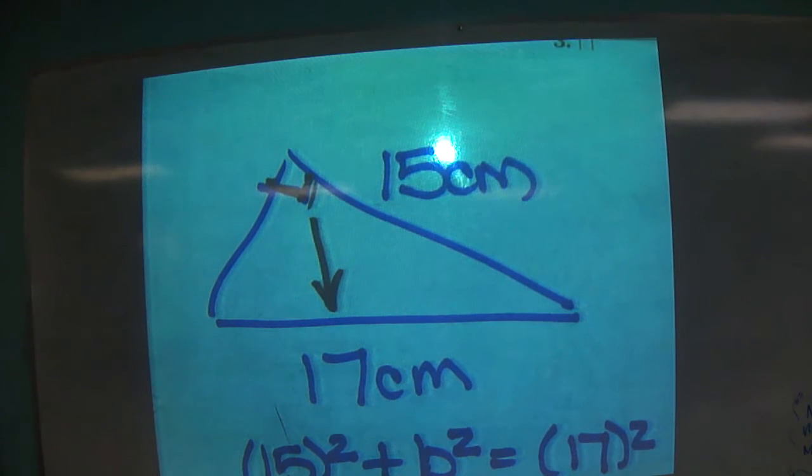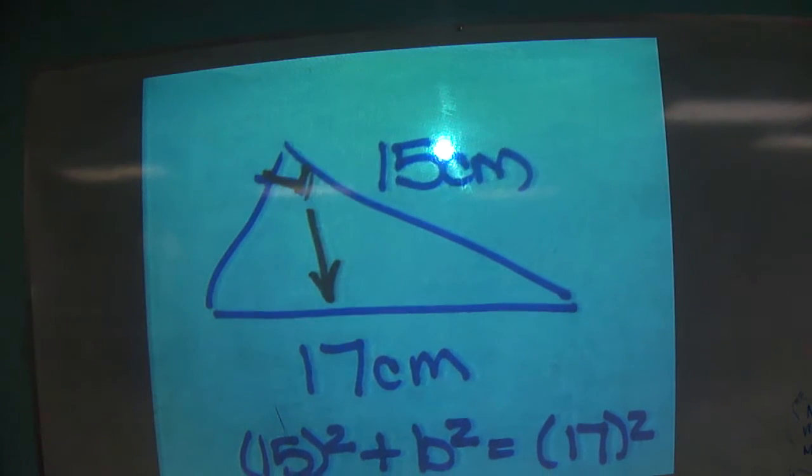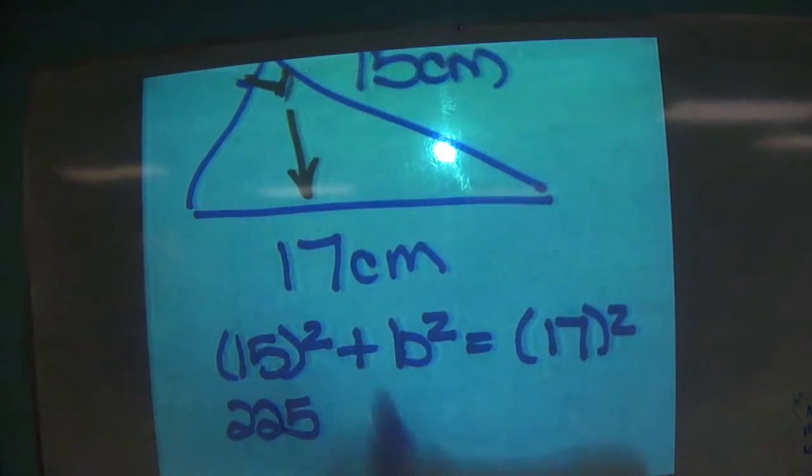So 15 squared. 15 is one of those that you've got to kind of keep in your chops. 15 squared is 225. You're going to come up on that one all the time. Plus B squared equals 17 squared? 289.